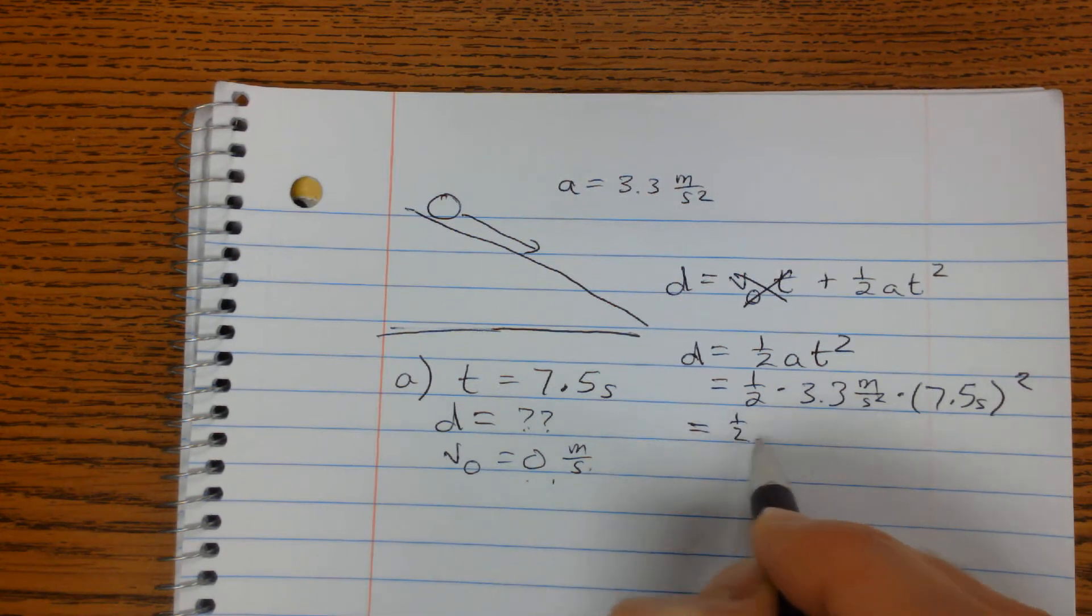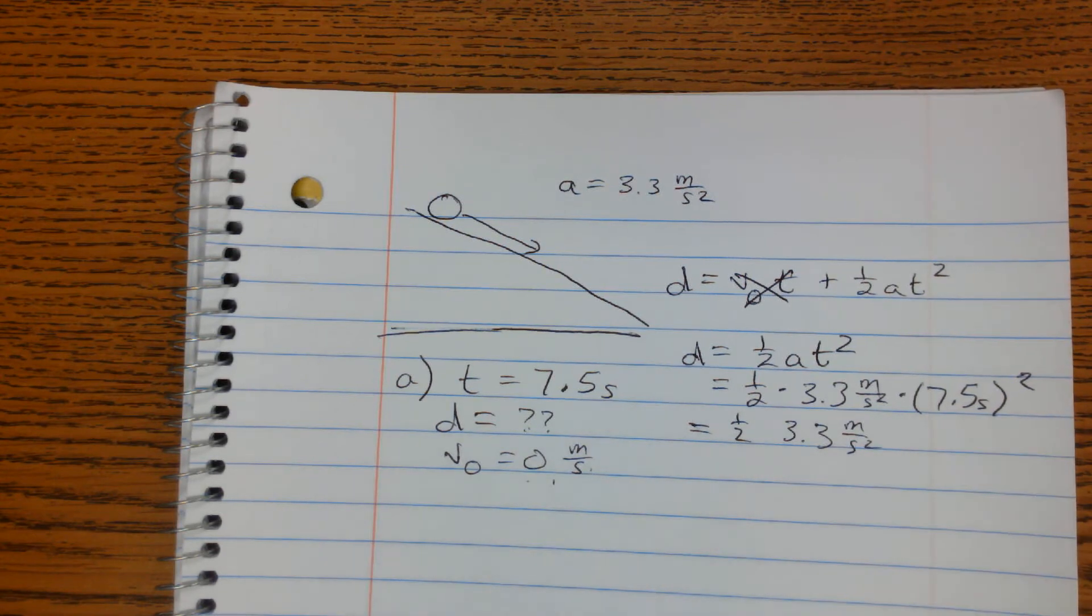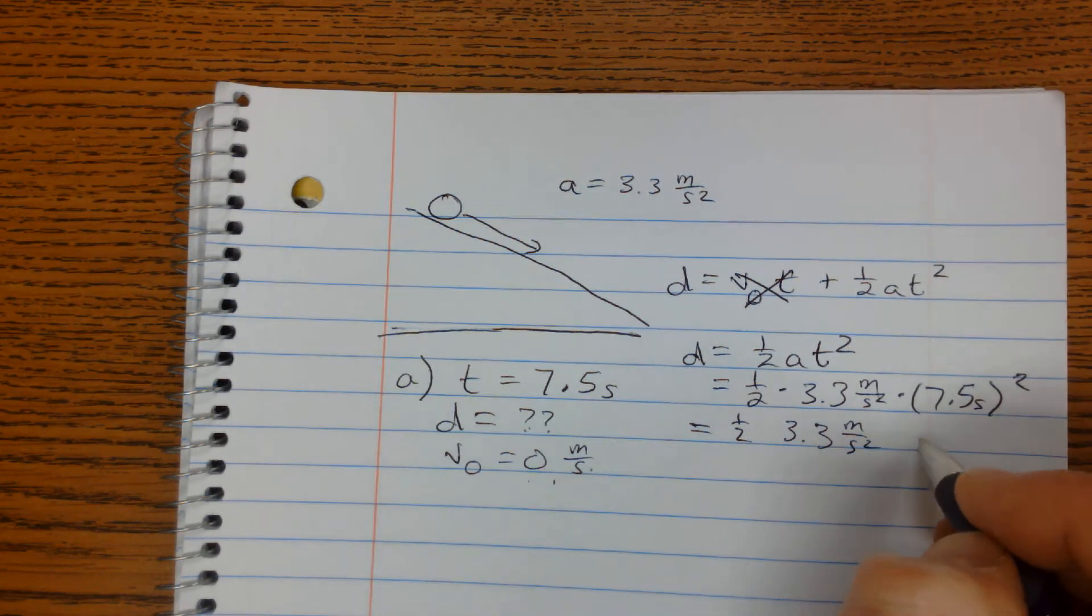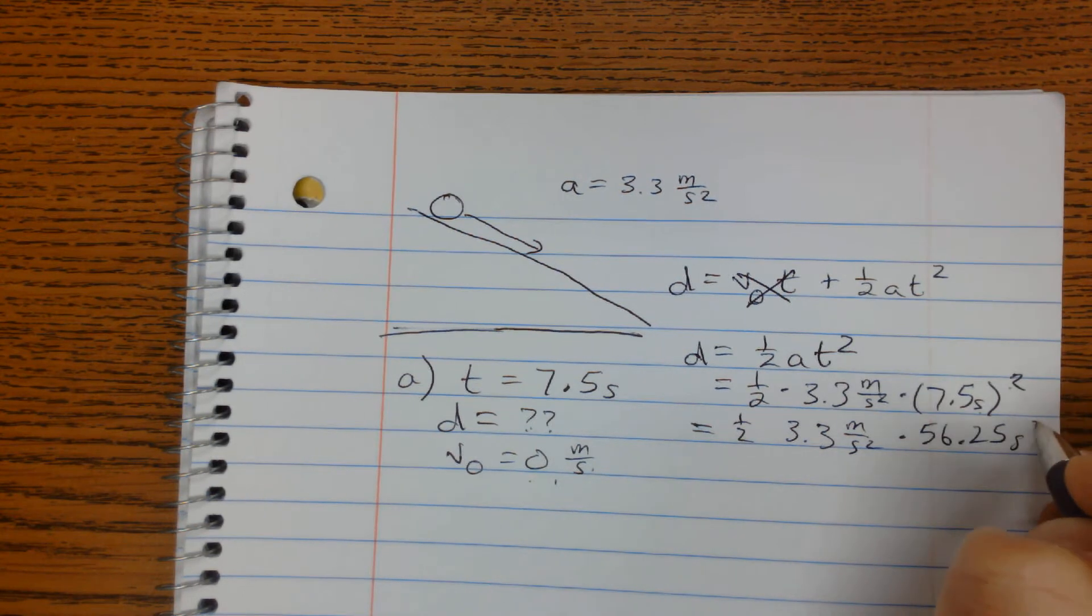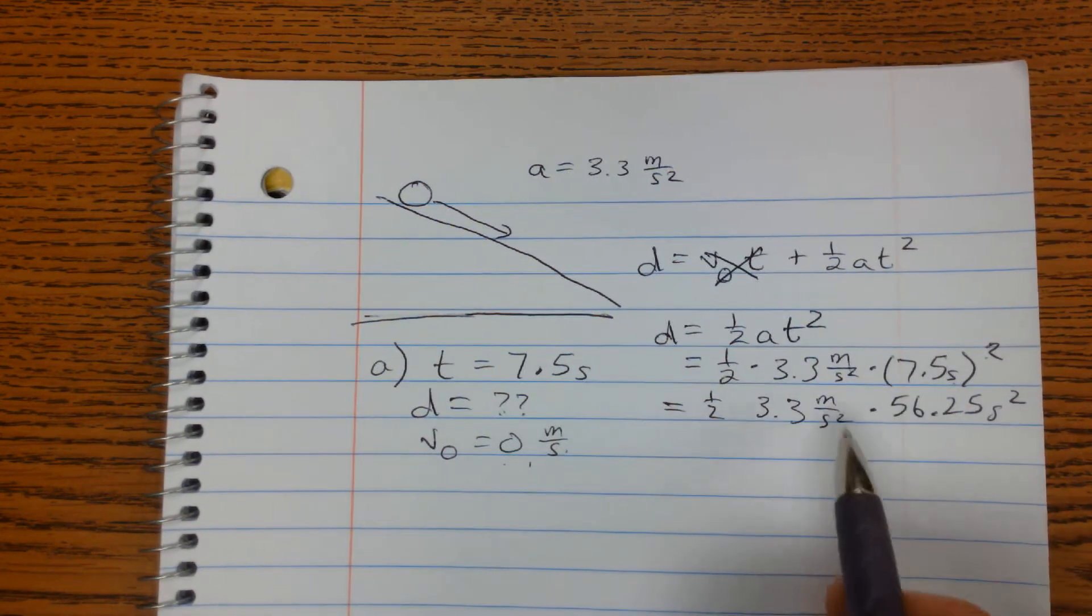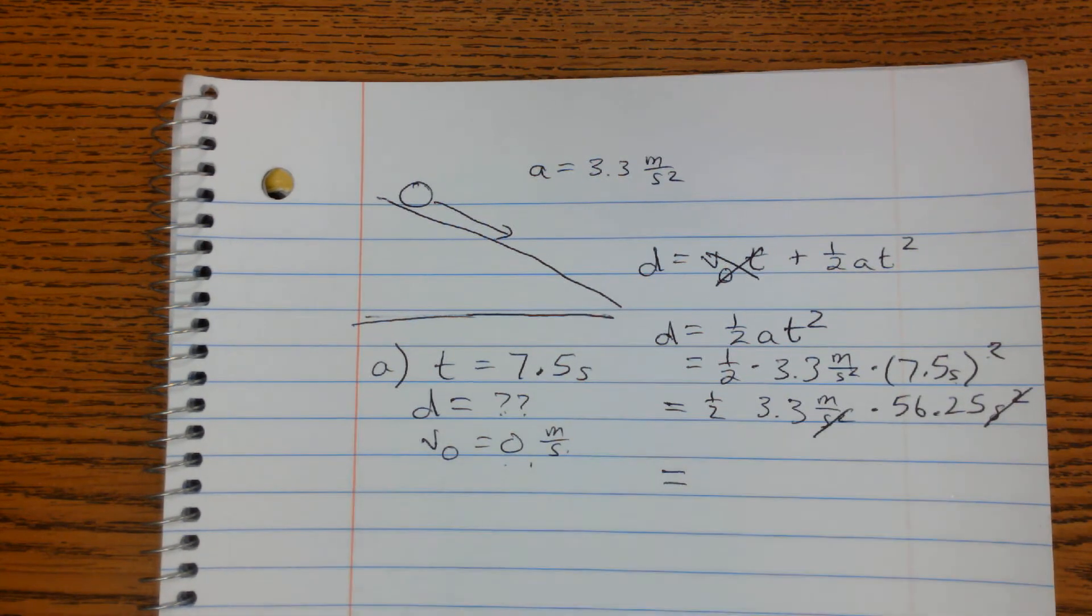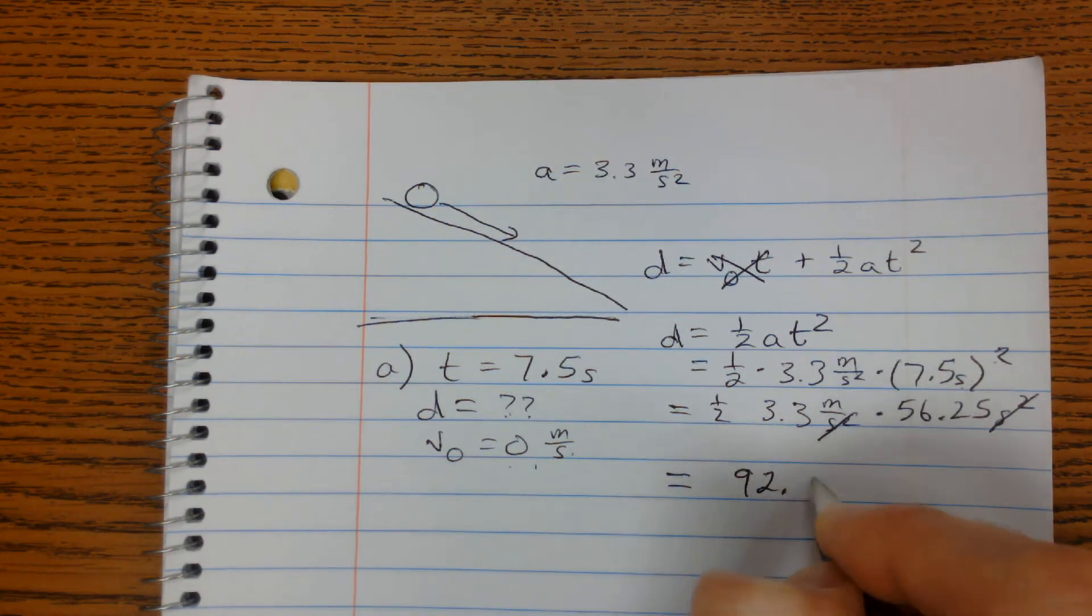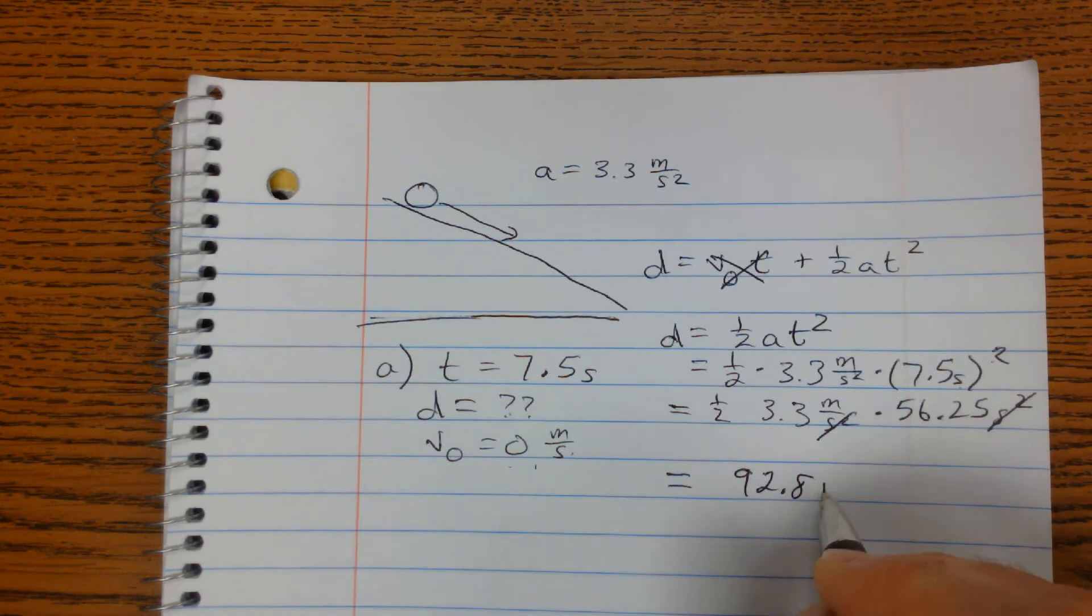All right, continuing through. And 7.5 squared is 56.25, and the seconds are squared. So when we multiply through, we have seconds on the bottom which cancel with the seconds on the top. And we'll get an answer of 0.5 times 3.3 times 56.25. We get 92.8, and my only unit left is meters.